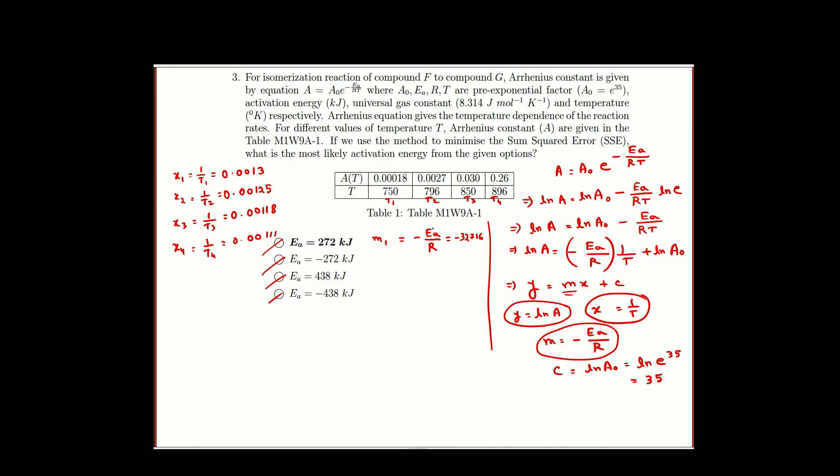What we are doing here, Ea is given as 272 kilojoule. But you can observe that the universal gas constant is given as joule mol inverse and kelvin inverse. So basically for Ea 272 we have to take 272,000.